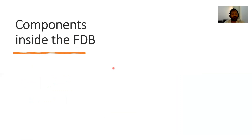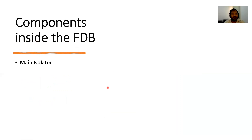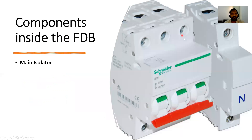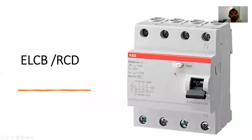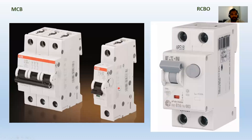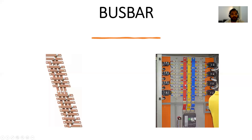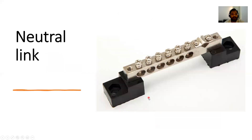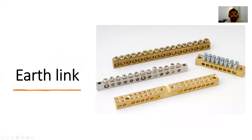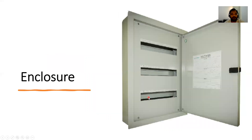The main components inside the distribution board are: the main isolator (a Schneider isolator), the ELCB/RCD, MCBs, bus bars, neutral links, earth links, and finally the enclosure.